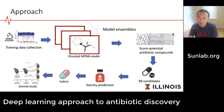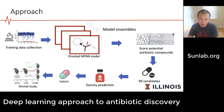This paper shows us how to use deep learning to do that. Here's the pipeline of their approach: they first gather training data collected from wet lab tests, then build an ensemble of graph neural network models. They use these models to score known drug molecules from the Drug Repurposing Hub to find the most promising antibiotic candidates. They identify 99 candidates, then apply further toxicity prediction to find the most promising one — a single molecule called halicin — and conduct further animal studies comparing halicin with existing antibiotic treatments, showing encouraging performance.